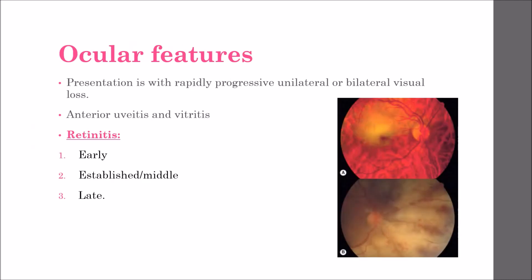Patients present with rapidly progressive unilateral or bilateral visual loss. Anterior uveitis and vitritis are minimal in contrast to CMV retinitis and acute retinal necrosis. Retinitis is classified into three stages. In the early stage, there is multifocal retinitis which may involve the macular area, often giving an appearance of a cherry red macula.